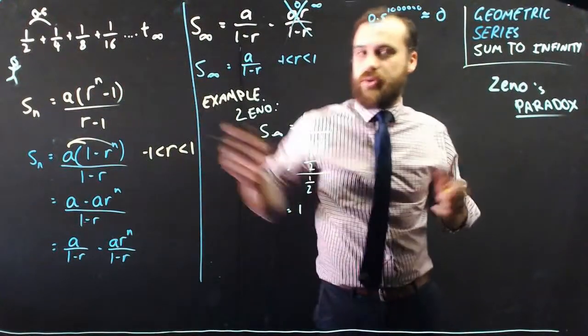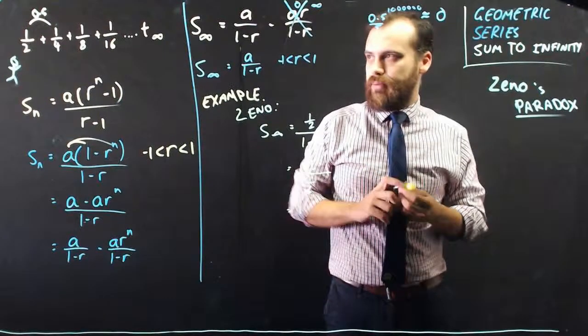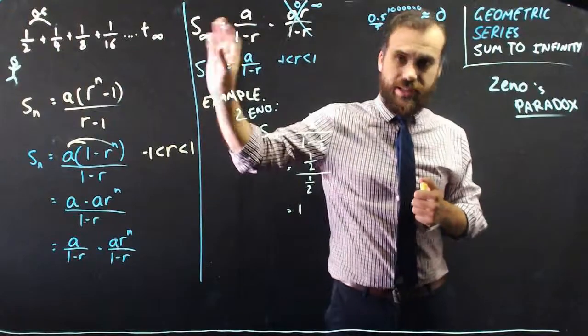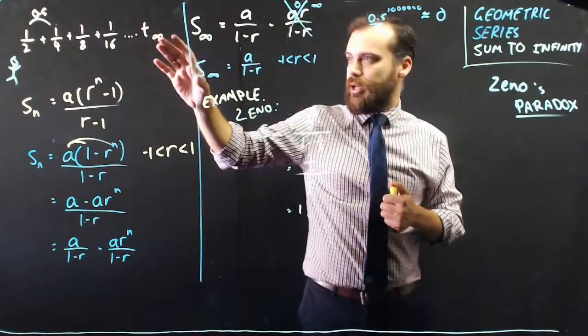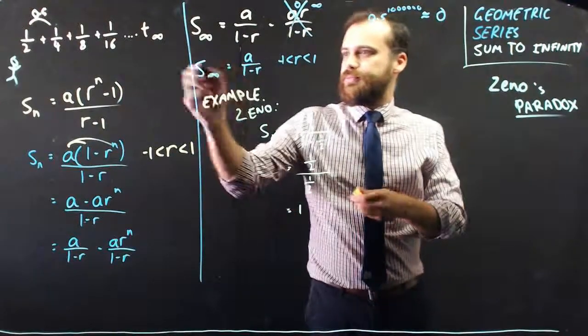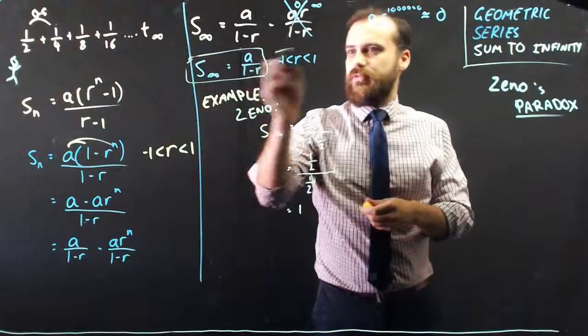1 is what this sequence adds up to. There are a million other examples, but this one's the classic, this is what started it all. As long as r is between negative 1 and 1, we can use our sum to infinity formula.